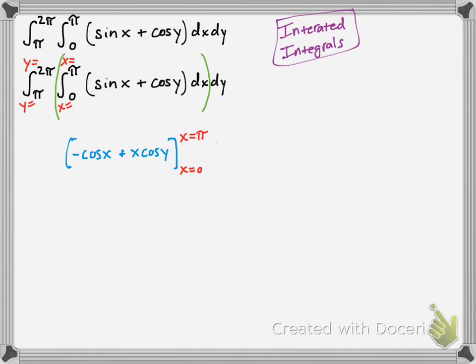Then you plug in those limits of integration. Make sure you plug them in for x. Don't get confused. That's why you write those. But remember, you still have that other integral to deal with. But first, let's evaluate that inside. So you plug in pi, and you get cosine of pi to be negative 1. But since it's negative cosine, it becomes positive 1.